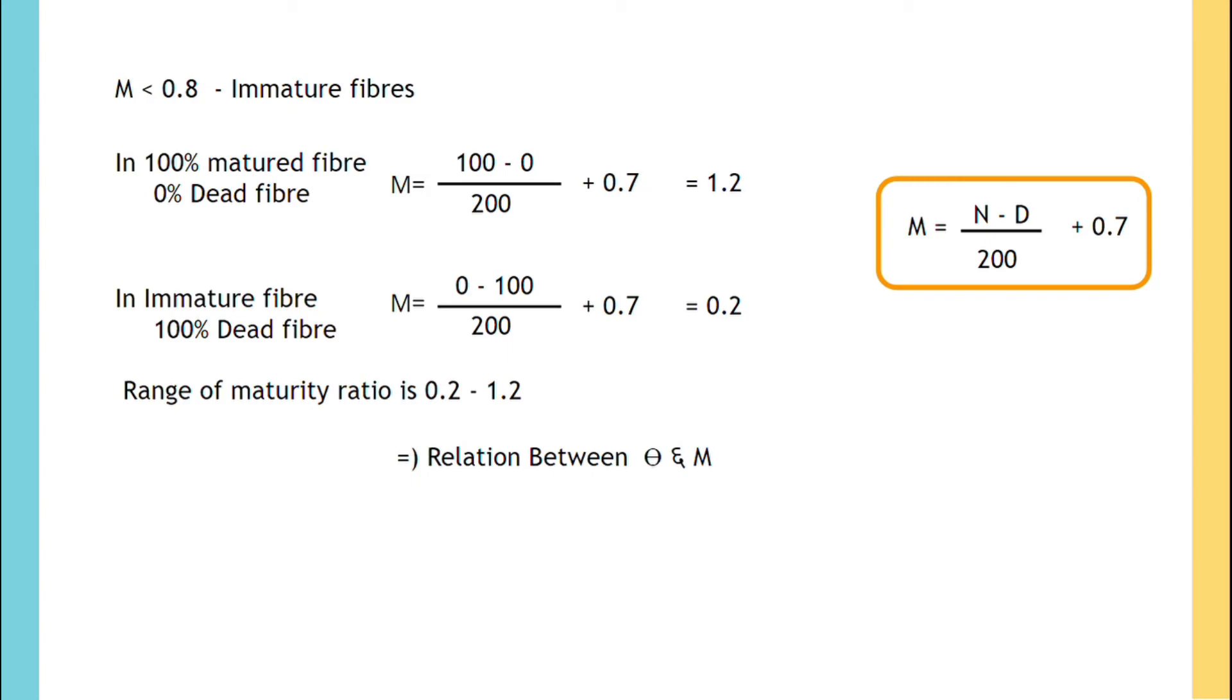So substituting 1.2 and 0.2 in M, we'll get theta in the range of 0.1154 to 0.6924.